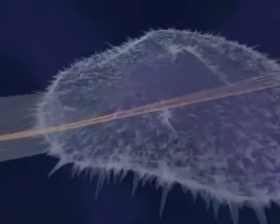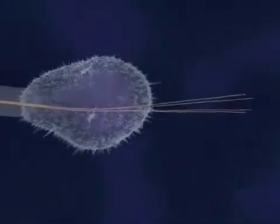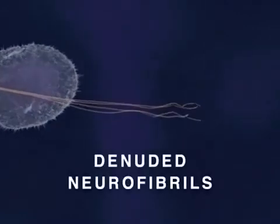Ultimately, both the developing neurite and its growth cone collapse, and some denuded neurofibrils form aggregates, or tangles, as depicted here.